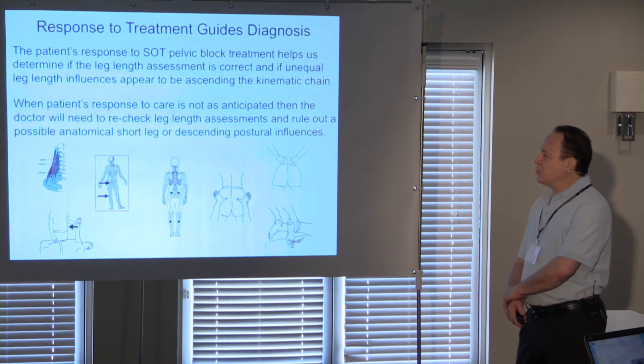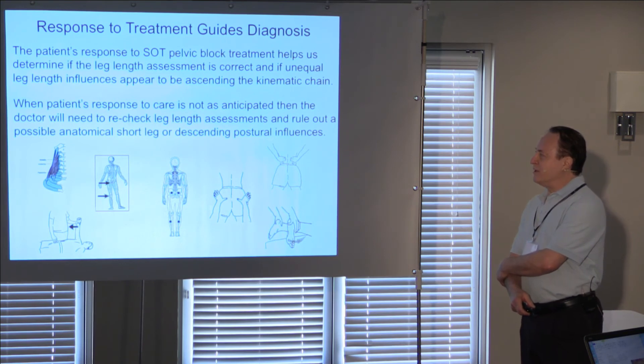So the patient's response to SOT block treatment helps determine if the leg length assessment is correct, if unequal leg length influence appear to be ascending the kinematic chain. And when the patient's response to care is not as anticipated, it's not what we considered that we would expect, then we need to really go back and check did we put the blocks in properly? Did we do the proper leg length assessment? If the leg lengths are equal, it would cause a problem to put torsion in that pelvis. Or is there an anatomical leg length issue that needs to be assessed? And that becomes part of our diagnostic criteria.